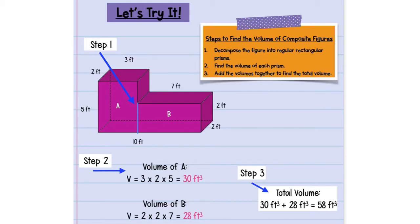And then for B, we would do the same thing. This would be a 7 by 2 with a height of 2. So 2 times 2 times 7 would give me 28 feet cubed. And then your final step is to add them together, which would have given us 58 feet cubed.